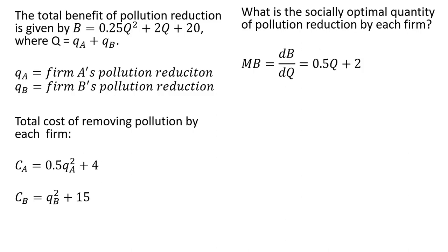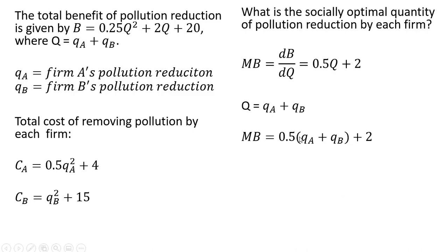First, we'll get the marginal benefit of pollution reduction by taking the derivative of the benefit equation. We get 0.5Q plus 2. The derivative of 20 drops out, which is why we exclude it from the result. Then we make a substitution for capital Q, giving us the marginal benefit of pollution reduction equation.